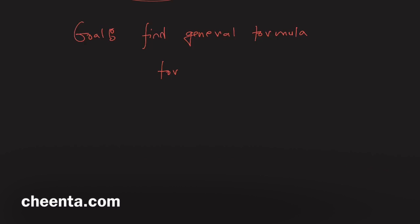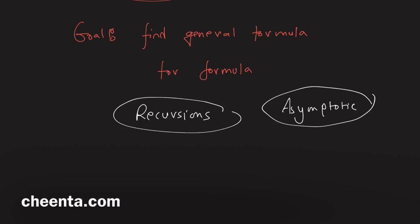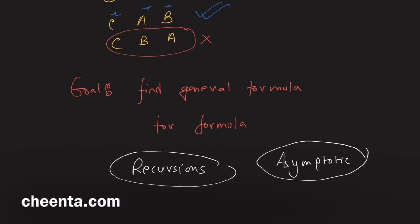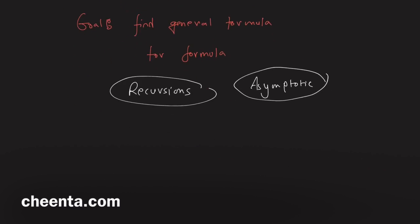There are certain beautiful recursive formulas for derangement - there are some recursions. And there is actually a beautiful asymptotic formula that tells you something very fundamental about derangements in the domain of permutations.